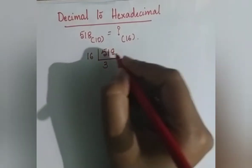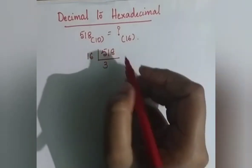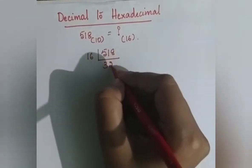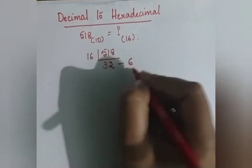16 goes into 518: 16 times 3 is 48, 3 carry, 16 times 2 is 32, 6 remainder.